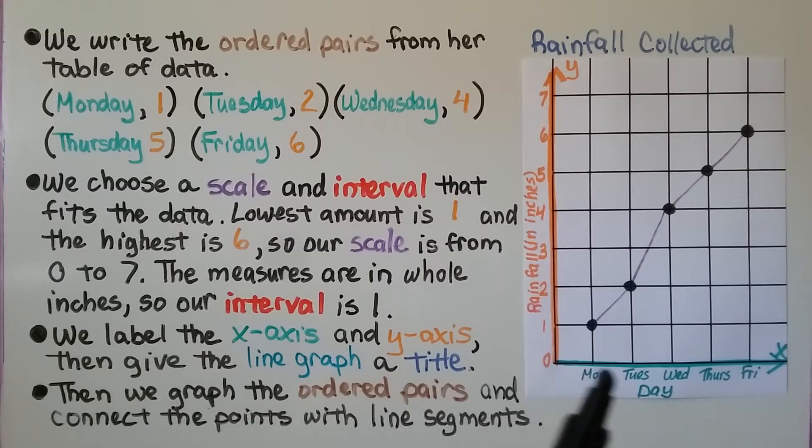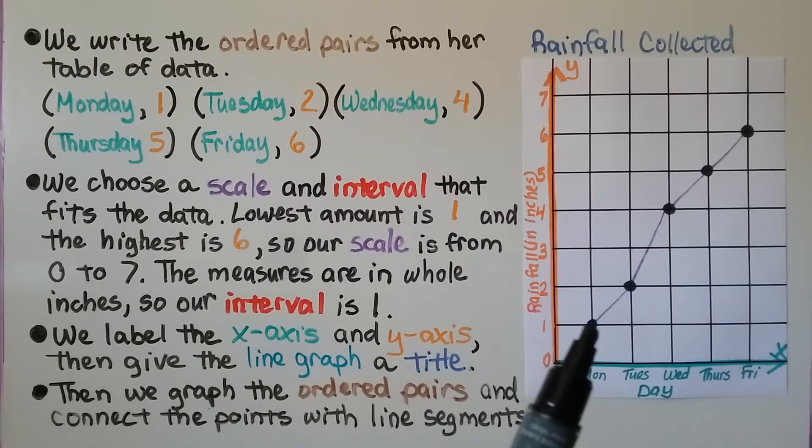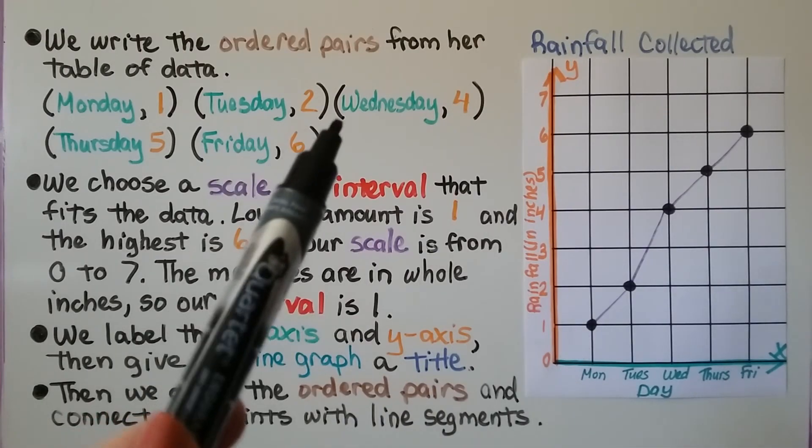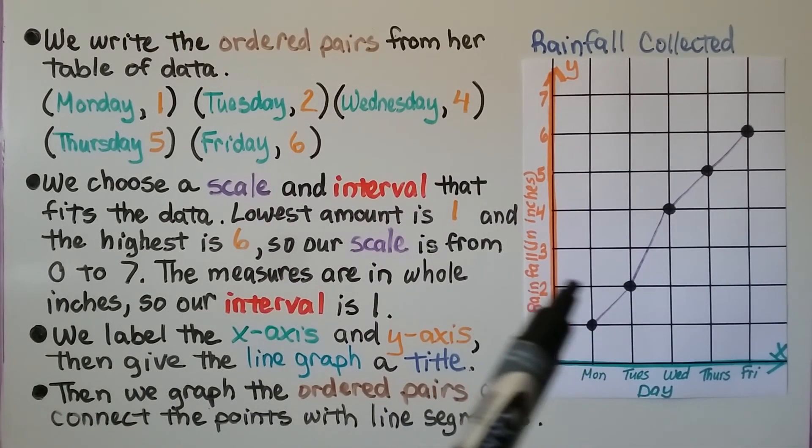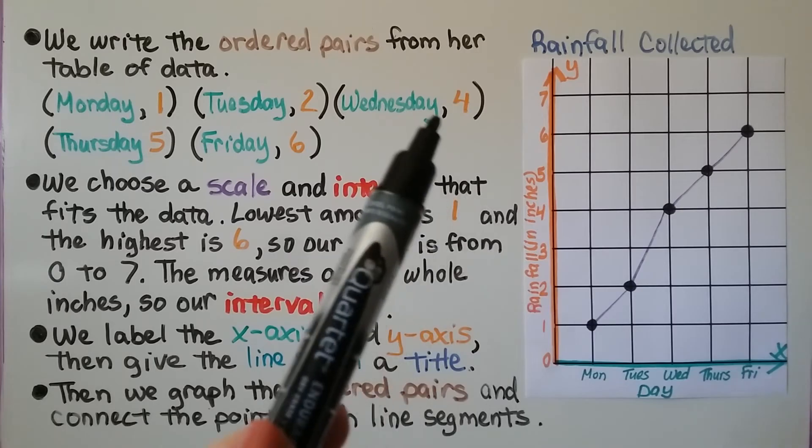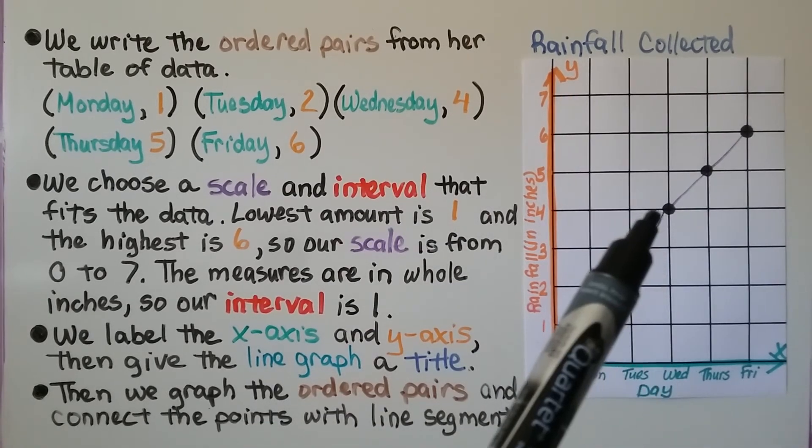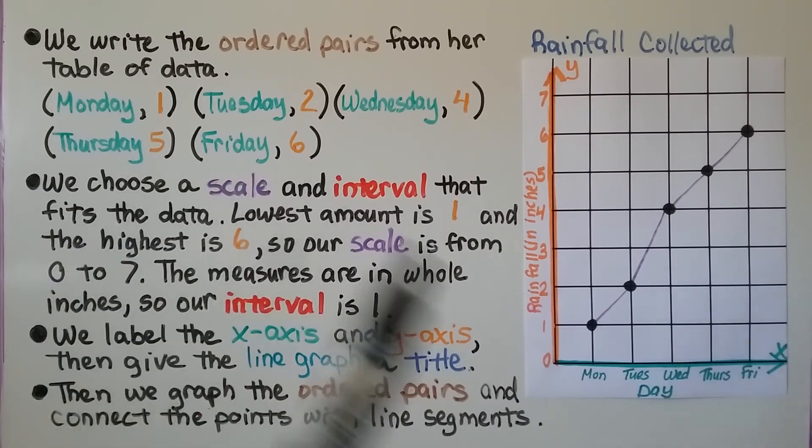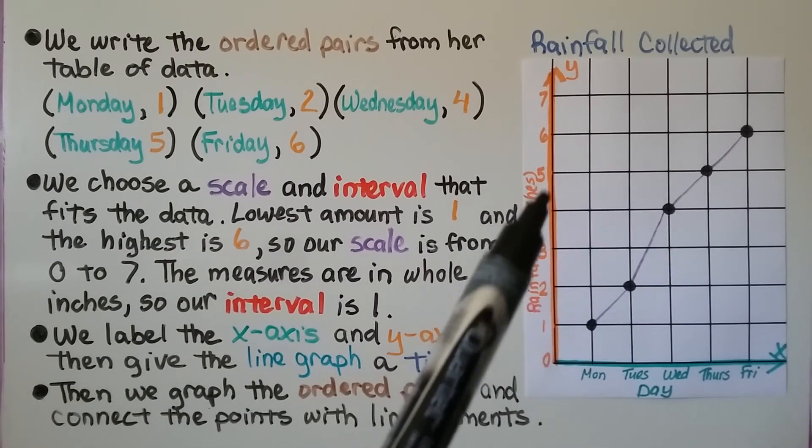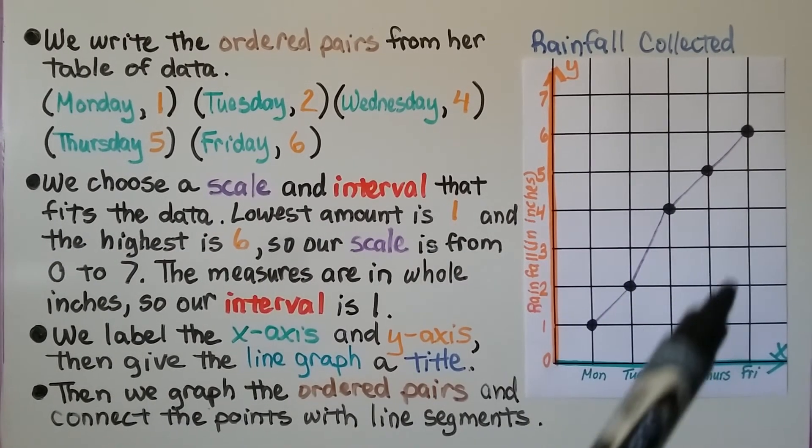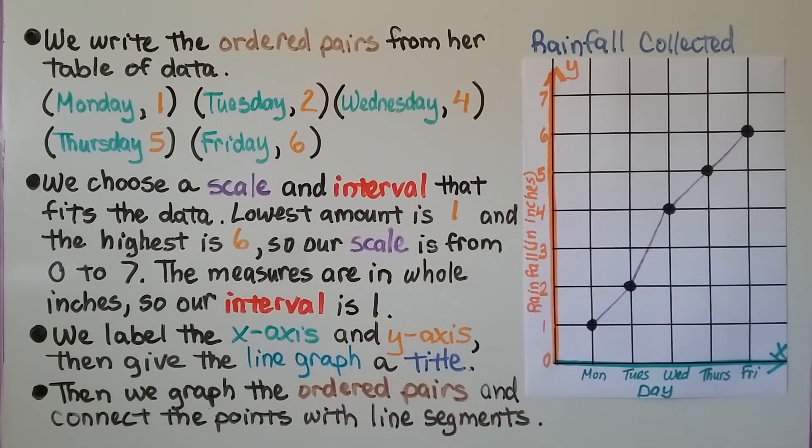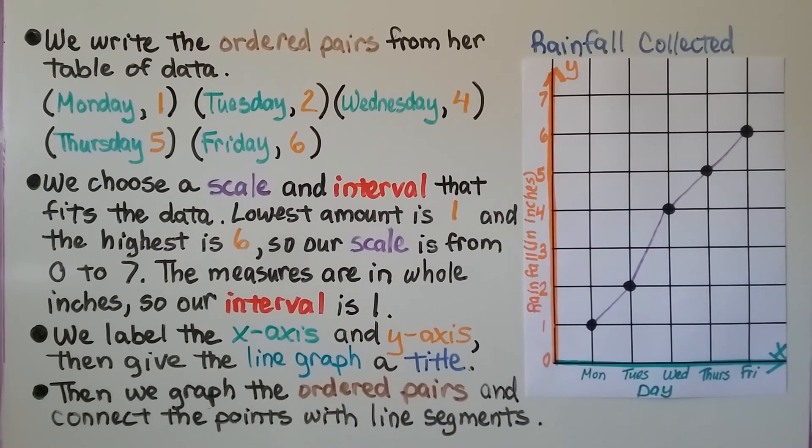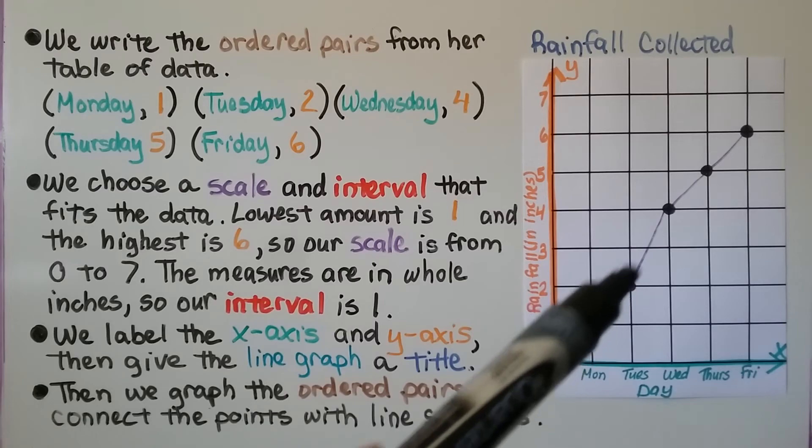And we graph the ordered pairs and connect the points with line segments. So here we've got the days and Monday is one. So we put a point here. Tuesday was at a two. So that's at two with Tuesday. Wednesday jumped to four. So we go to four on Wednesday. Thursday is five. So that's at five. And Friday is at six. That's at six. We connect them with line segments between the points.